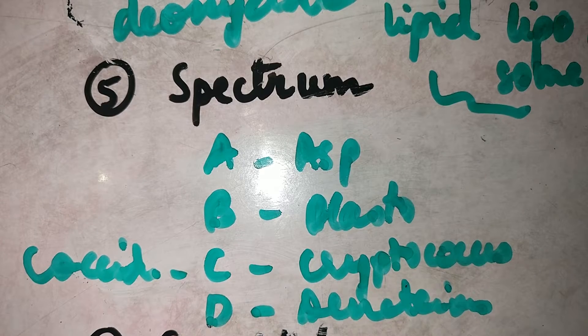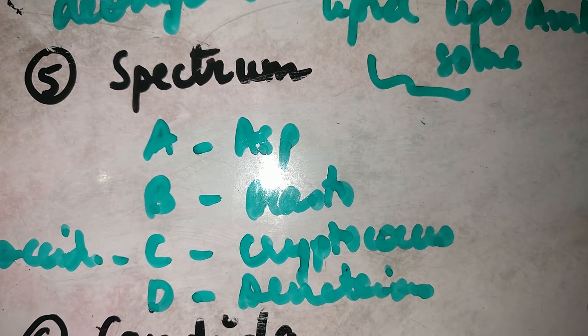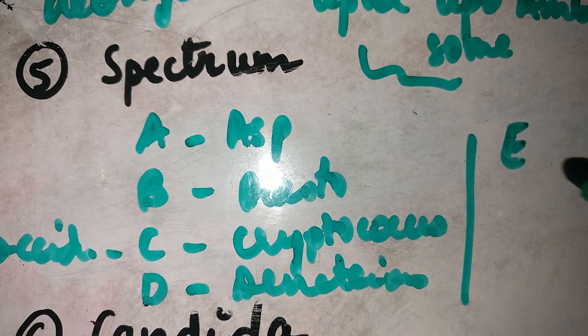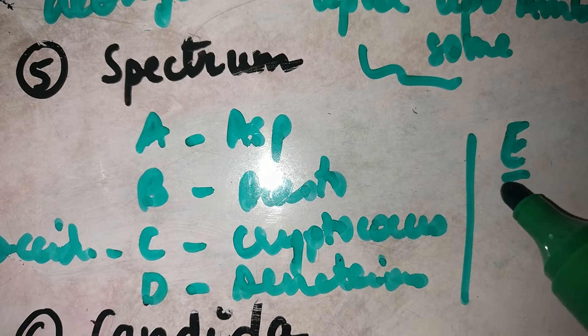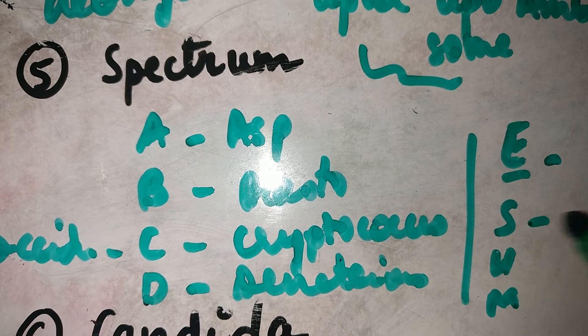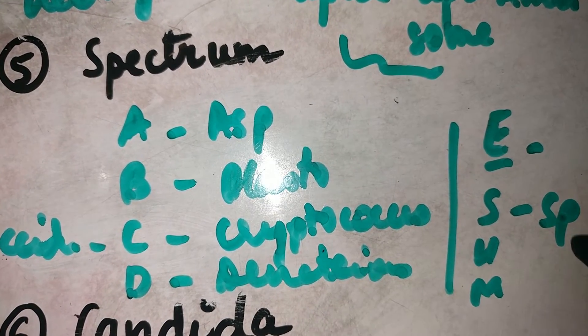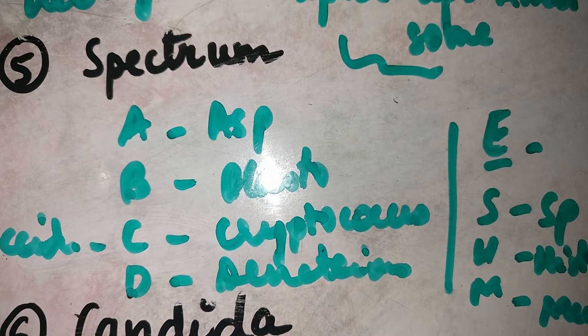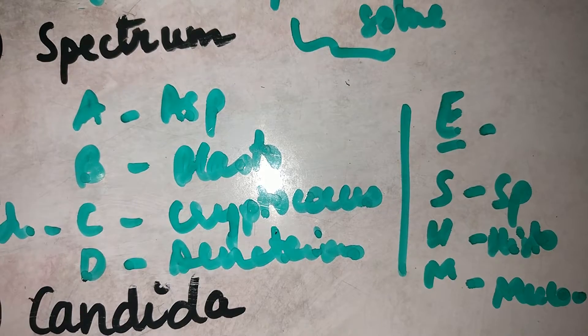Dematiaceous Fungi basically produce Chromoblastomycosis. Along with this, there's something special about Amphotericin B. So you can remember that A, B, C, D, E. E stands for EDM and the famous EDM band is SHM. So this stands for Sporothrix, H stands for Histoplasma and M stands for Mucor.